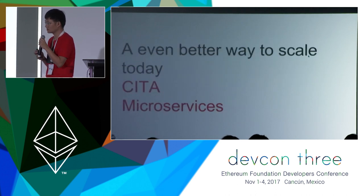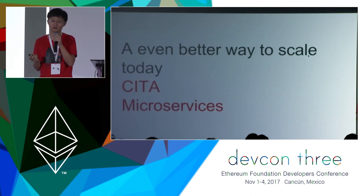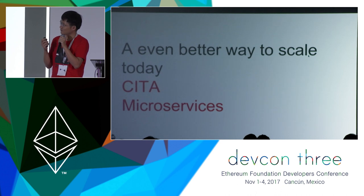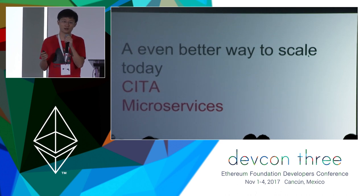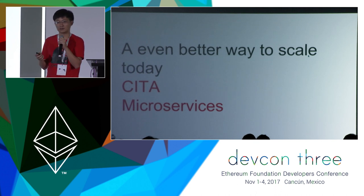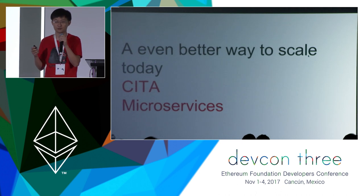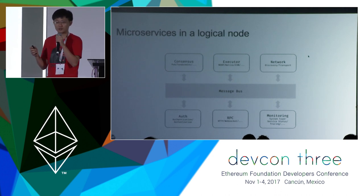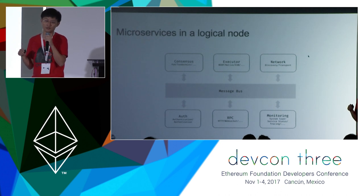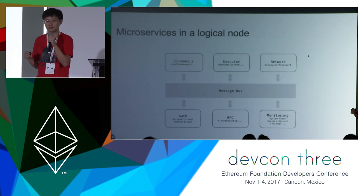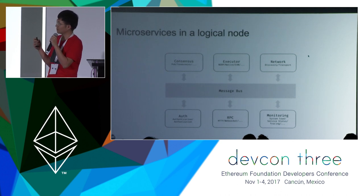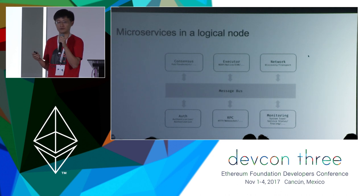We have an even better way to do that — and we don't need a mainframe. We use the same techniques used by internet companies. We redesigned the architecture of a full node to use microservices. We break the functionalities of a full node into many independent modules, and each module can run as an independent process. All of those processes can run on independent servers, so you can use a server cluster to run a full node.